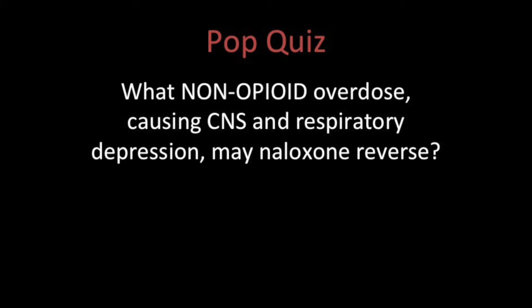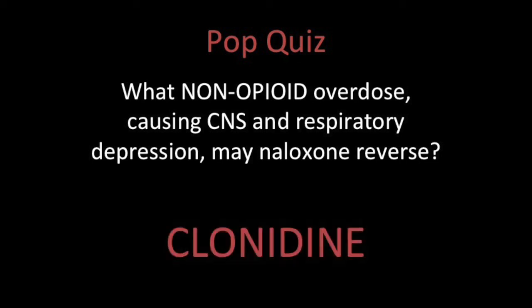Does anyone know a non-opioid medication that Narcan reverses — one that can be a common overdose in children? It's clonidine. Clonidine is a hypertension medication, and a lot of older folks have it in the house. A child can get into the pill cabinet — and there are a few pills that can kill a child with just a few of them, and clonidine is one of those. Due to sharing different receptors, Narcan can actually reverse it. This might be a good time to call your medical direction — it's not in the protocols, but just know it's another use for Narcan.